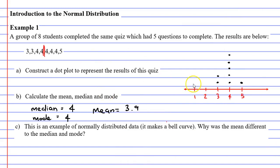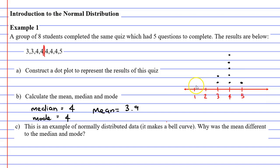Now if this is normally distributed data and it makes a bell curve, then we've been told that the median, mode, and mean should all be the same. So why is it that the mean is slightly different to the median and mode? When we look at our graph and think about that bell shape, you might notice that it's not perfectly symmetrical — it's almost symmetrical, but not perfect. As we mentioned in a previous video, if it's not perfectly symmetrical, then quite often your mean will just be slightly different to the other two.